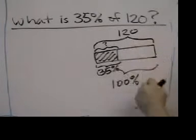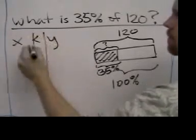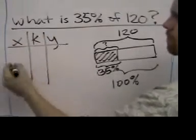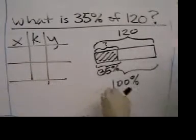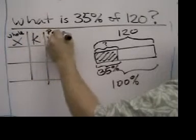So now that we've got the picture drawn, we can go over here and make an X, K, Y table fairly simply. X represents the whole numbers and the Y represents the part.